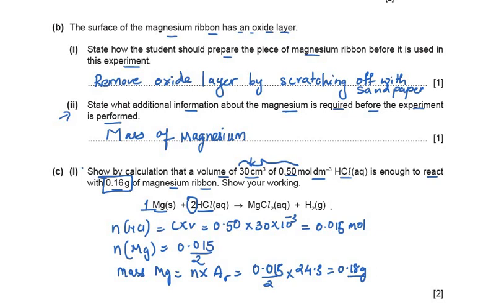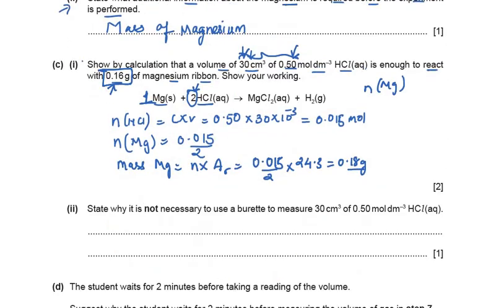The mass of magnesium required to react with the HCl used is 0.18 g, but we are using only 0.16 g — so the HCl is more than enough to react with 0.16 g of magnesium. Alternatively, you can calculate the moles of magnesium used, then from the stoichiometry (mole ratio of Mg and HCl), calculate the volume of HCl required at that concentration — either method is acceptable.